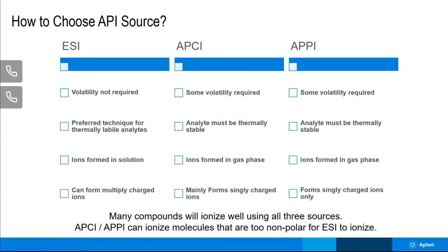So how do you choose which source? For ESI, the volatility of your target compound is not required. For APCI, you do need some volatility. APCI also requires that your chemical be thermally stable. If it's not stable, you might just end up destroying it in the source with the heat. So if you have a thermally labile compound, ESI is definitely the way to go.